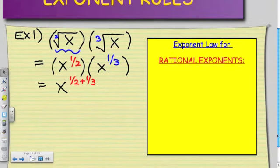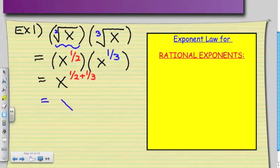So if we keep the base as x, 1 half and 1 third have a common denominator of 6. And the fraction will convert as 3 over 6 plus 2 over 6, which gives me a final answer, x to the power of 5 over 6.